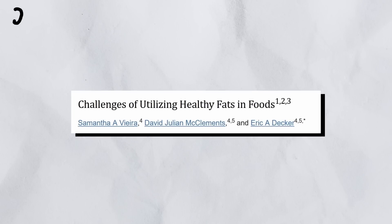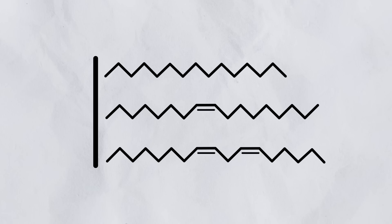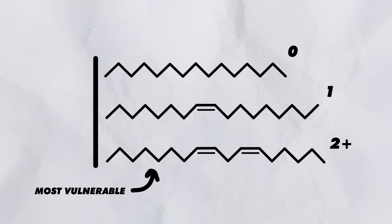This is why understanding saturation is such a big deal — because each type of fatty acid is not equally susceptible to oxidation. A review lays it out perfectly: double bonds increase the susceptibility of fatty acids to oxidation, with an increasing number of double bonds increasing oxidative susceptibility. There are levels to this. The more double bonds a fatty acid has, the higher the chances of it becoming oxidized. Saturated fatty acids do not have any double bonds. Monounsaturated have one, and polyunsaturated come with two or more — so polyunsaturated fatty acids are objectively the most susceptible to oxidation.